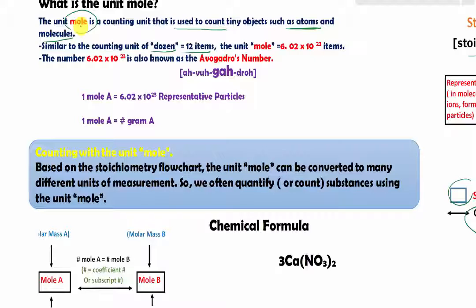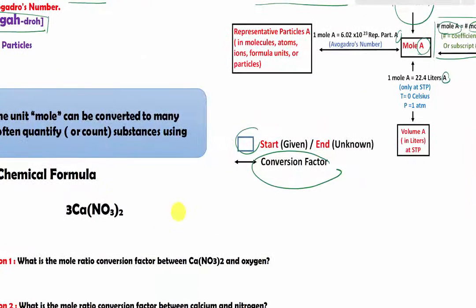Just like a dozen is equal to 12 items, a mole is equal to a very large number — which makes sense because we need a very large number to count very small items. That number is known as Avogadro's number, shown on the stoichiometry flowchart. Avogadro's number is 6.02 × 10²³, and it is always equal to 1 mole, just like a dozen equals 12.